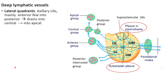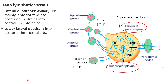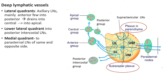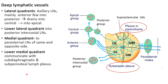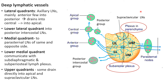From the lower lateral quadrant, some lymph will also reach the posterior intercostal group of lymph nodes. From the medial quadrants, lymph goes to the parasternal lymph nodes — not only on the same side but also to the opposite side. From the lower medial quadrant, some lymphatic vessels communicate with the subdiaphragmatic and subperiosteal lymphatic plexuses, so lymph can reach the abdomen. From the upper two quadrants — upper medial and upper lateral — some lymph will directly reach the supraclavicular lymph nodes.